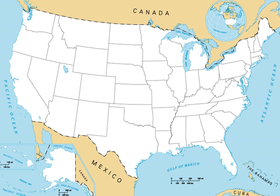The contiguous United States would be placed fifth in the list of sovereign states and dependencies by area. The total area of the country, including Alaska and Hawaii, ranks fourth.